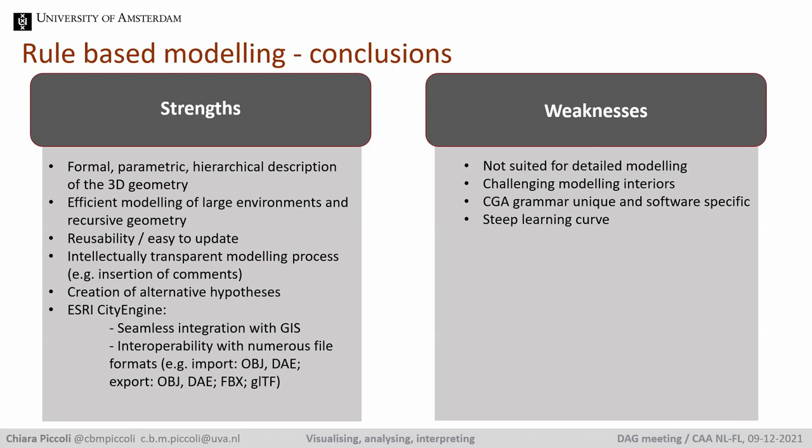The strengths are related to the possibility to create architectural variations in a building type to fill large areas. However, it's also interesting to use it for the parametric modeling of alternative hypotheses of one building — an approach taken for example in the 3D reconstruction of one building at Portus in the Portus project by the University of Southampton. It's also quite challenging to model building interiors, and in the second part of my presentation I'll talk about manual modeling as the method to do that.